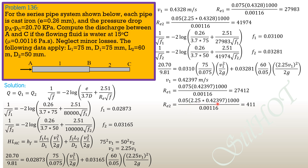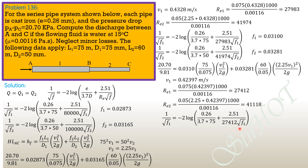Reynolds number 2 equals (0.05 × 2.25 × 0.42397 × 1000) / 0.00116, giving 41,118. Substituting into the Colebrook equation, the new F1 equals 0.03107, which is practically equal to the preceding friction factor.